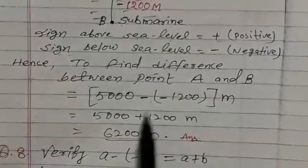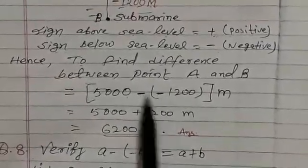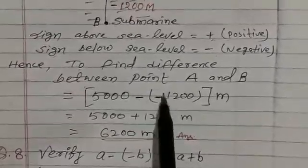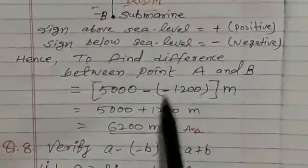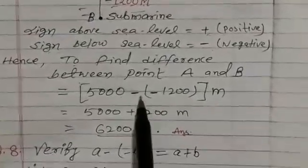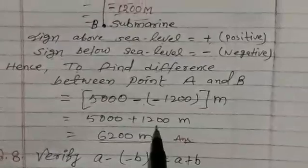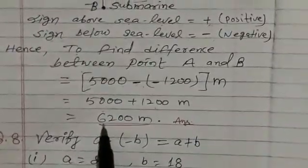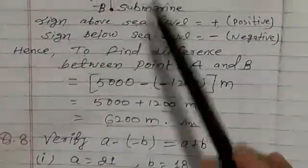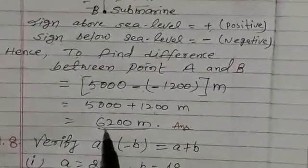As we know, when two same sign are written here, when we broke out this small bracket, then you multiply, minus multiply minus, it becomes plus. So 5,000 plus 1,200, it becomes 6,200 meters. So vertical distance between plane and submarine is 6,200 meters. This is answer.